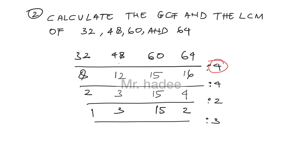1 cannot be divided by 3, so write 1 again. 3 divided by 3 equals 1. 15 divided by 3 equals 5. 2 cannot be divided by 3, so write 2 again. The GCF equals 4 — the only circled number.